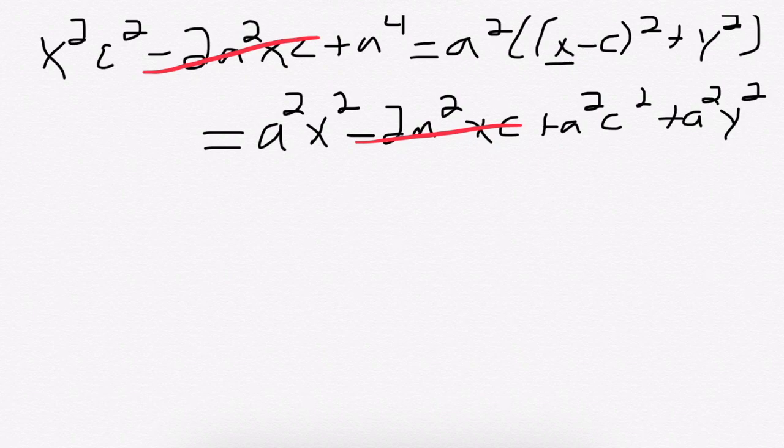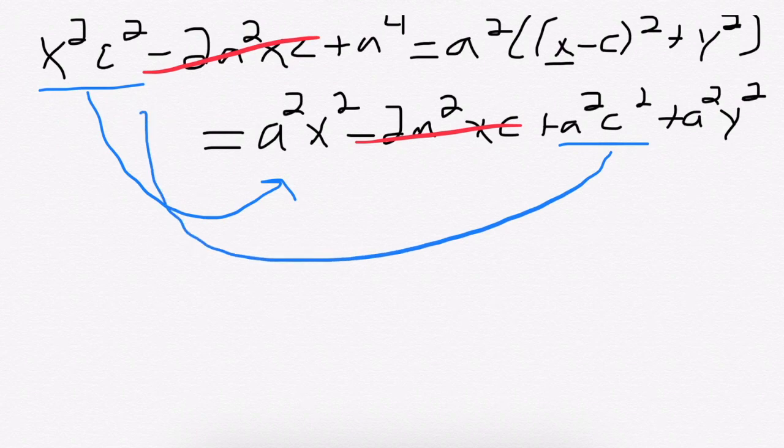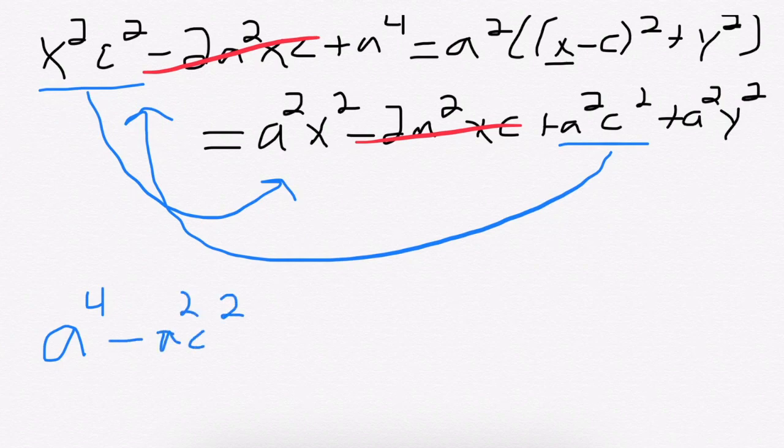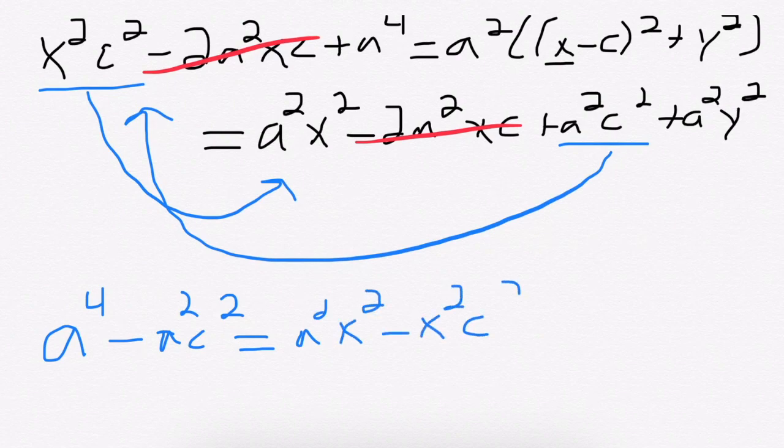And what I'm going to do now is I'm going to move all the x squared terms to one side, and all the ones without any x's and y's to the other side. What that's going to give me is a to the fourth minus a squared c squared. That's going to equal, I've got my a squared x squared, I'm subtracting an x squared c squared, and I still have my a squared y squared.